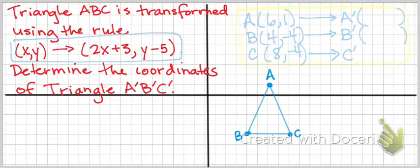So how do we come up with those coordinates? Let's look at them one at a time. Let's look at point A. It's (6, 1).